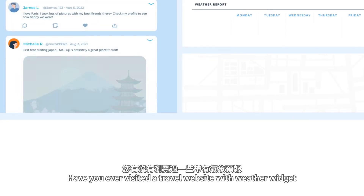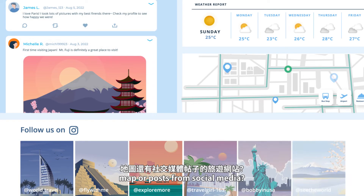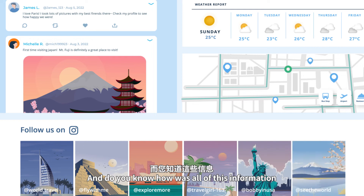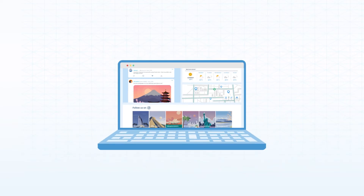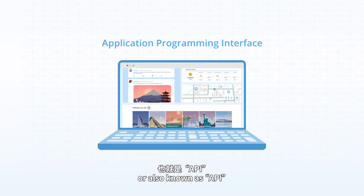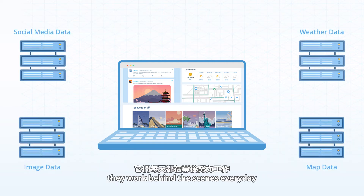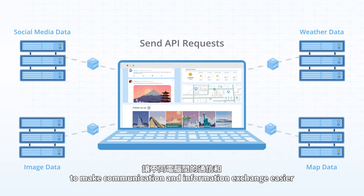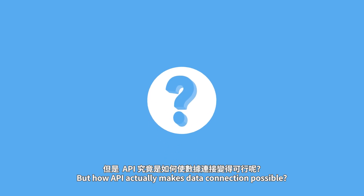Have you ever visited a travel website with a weather widget, map, or posts from social media? Do you know how all of this information is collected on a single website? Thanks to Application Programming Interface, or also known as API, they work behind the scenes every day to make communication and information exchange easier between different computers. But how does an API actually make data connection possible?